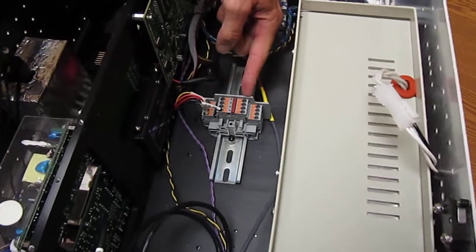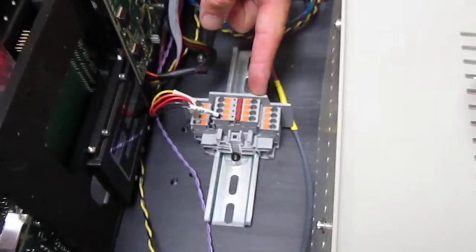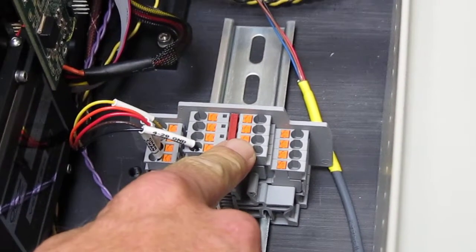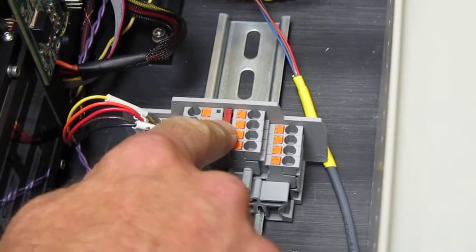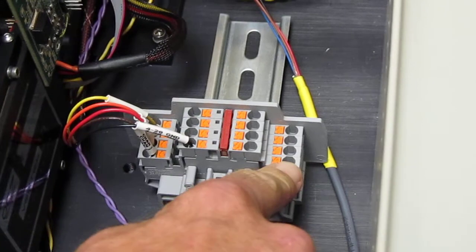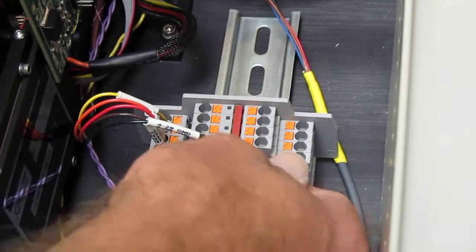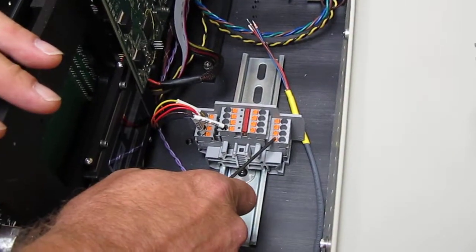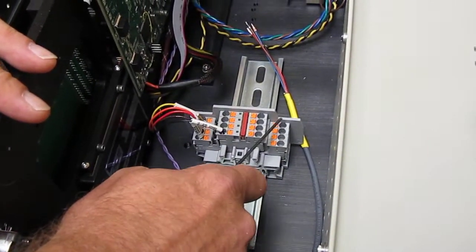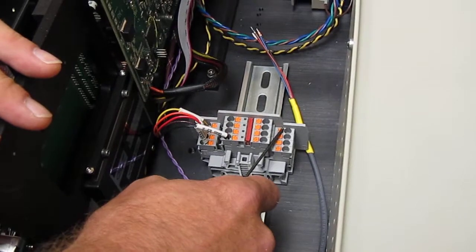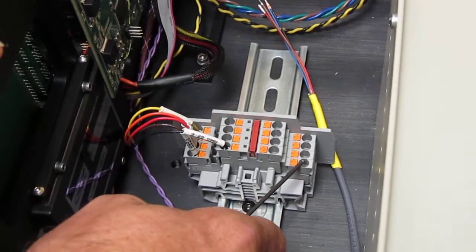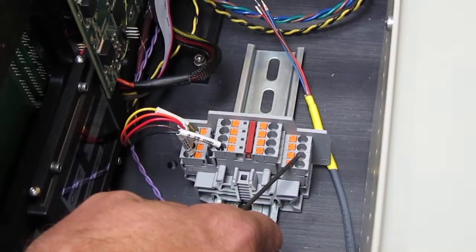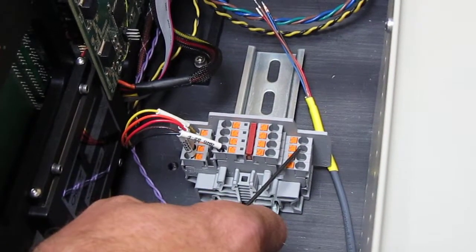This DIN rail and terminals contain the 4 to 20 milliamp outputs. The top rail is common ground bridged. The bottom rail is the output channels. This is channel I, J, K, and L. These are pre-configured for sulfur vapor concentration, sulfur vapor R square, and the intensity of the source.